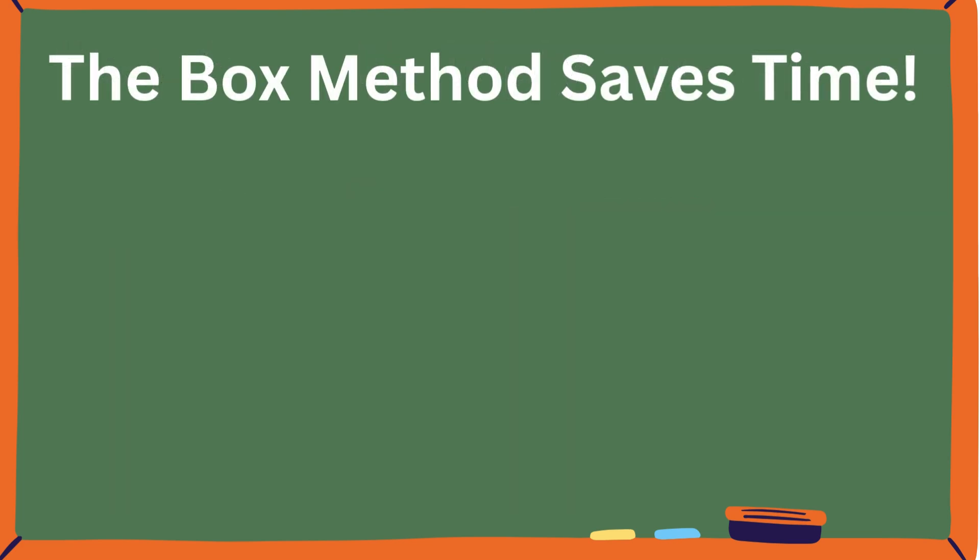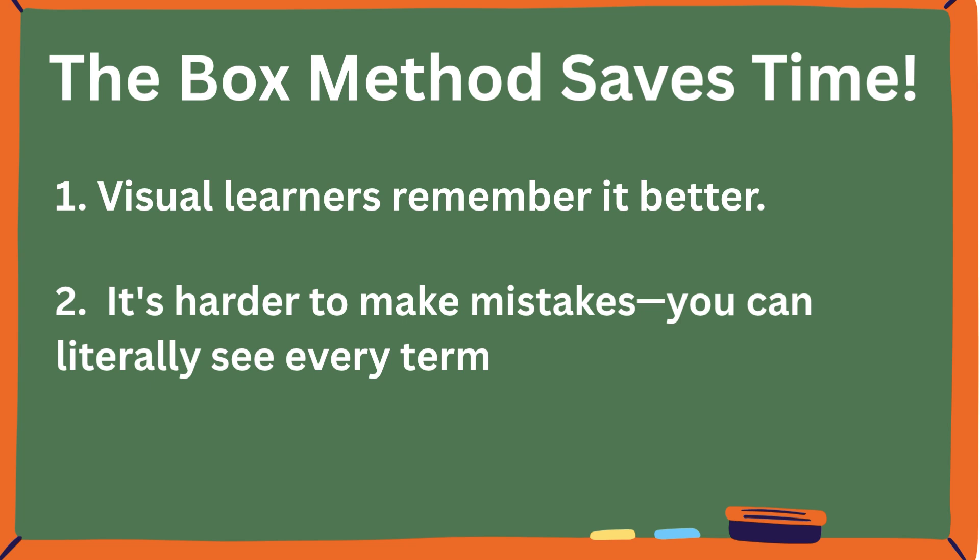Why is the box method faster? Visual learners remember it better. It's harder to make mistakes—you can literally see every term, and you can apply it to trinomials too.